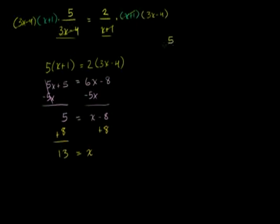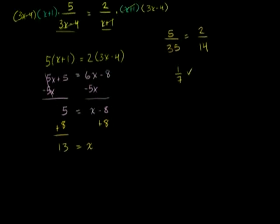You could even try it out: 5 over 3 times 13 is 39, and 39 minus 4 is 35. This should equal 2 over 13 plus 1, which is 14. And they both equal 1/7, so it checks out. Let's do a more involved problem.